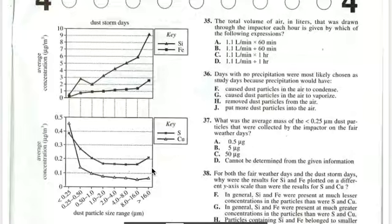Let's see if it's true for the dust storm days. And we can see again that the data shows that the average concentration of silicon and iron is always higher than 0.5, except at the very small, less than 0.25 nanometer size. So for most of the data, the sizes of the silicon and iron particles are much greater. The average concentrations of the silicon and iron are much greater than that of sulfur and copper.